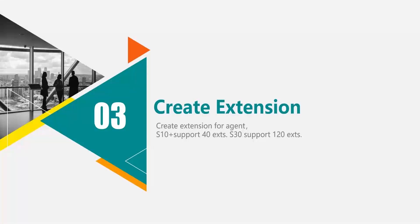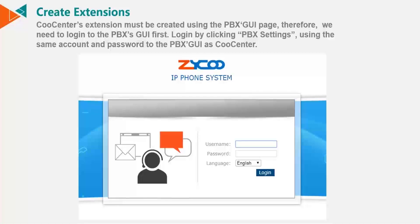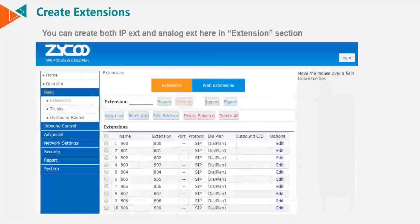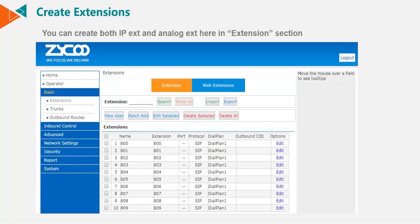Next we need to create an extension. There are two models within the CoolCenter range currently: the S10 Plus supports up to 40 extensions and the bigger S30 supports up to 120 extensions. To create an extension, you must log into the PBX GUI page. You log in to the PBX using the same credentials as you did when logging into CoolCenter. Here you can create IP or analog extensions.